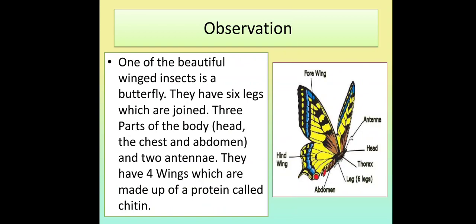Here are some observations. One of the beautiful winged insects is the butterfly. They have six jointed legs and three body parts: the head, the chest (also called the thorax), and the abdomen, as well as two antennae. They have four wings which are made up of a protein called chitin.